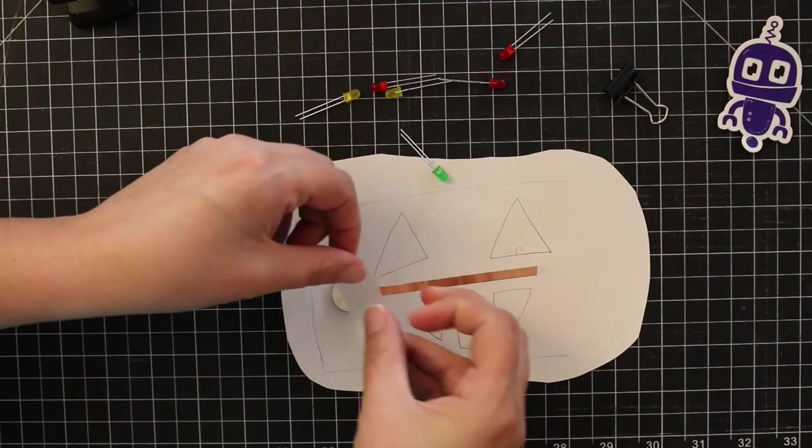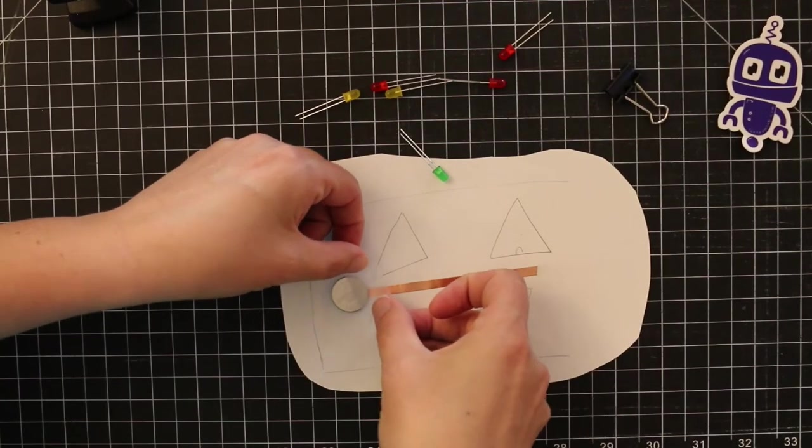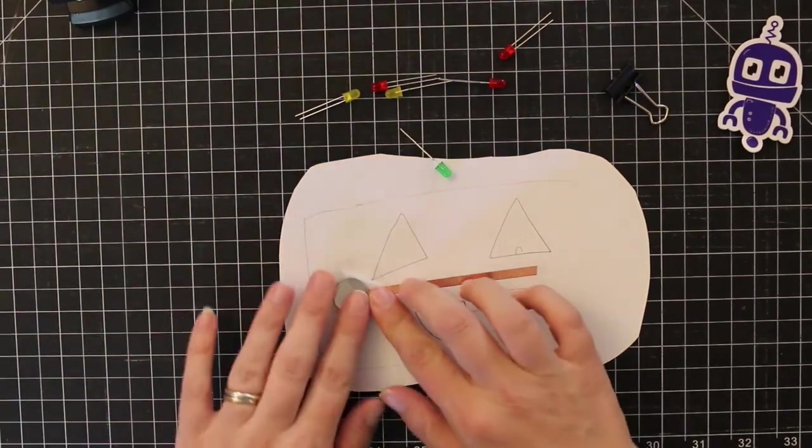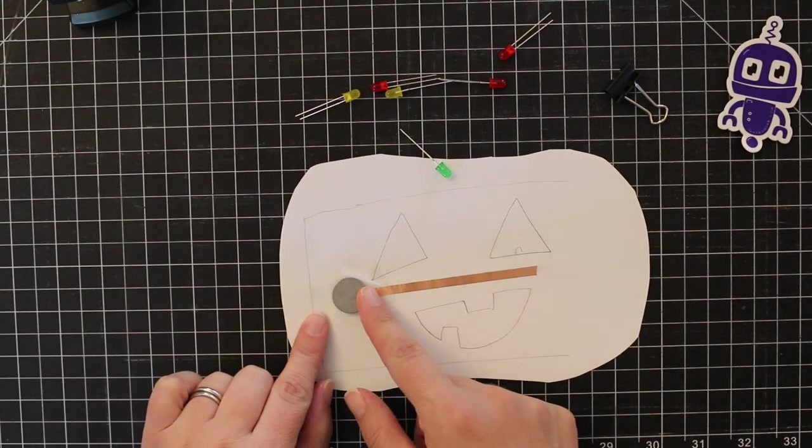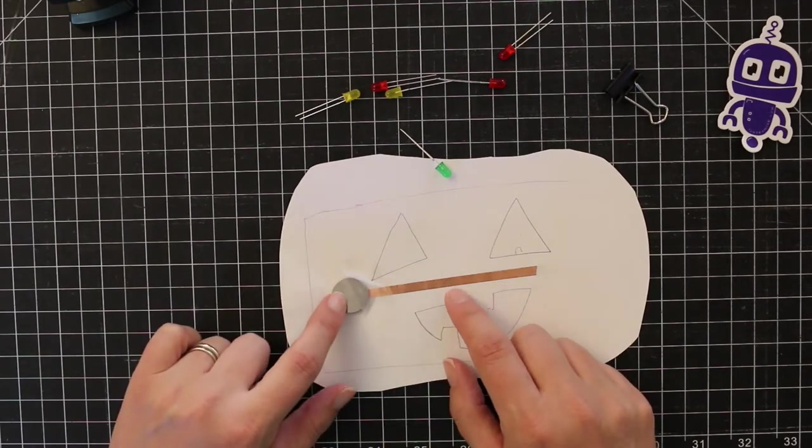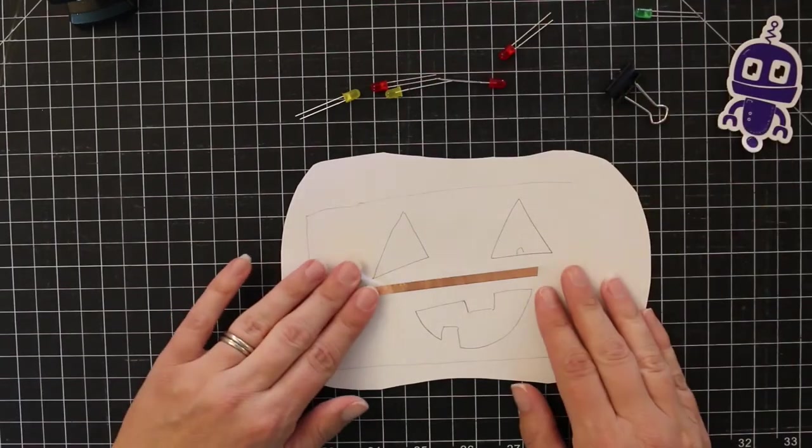I'm going to tape my battery down. There we go. I don't want to tape my whole battery. I'm taping just part of it because I want to make sure that the positive part of the battery is still available for folding over the copper tape we're going to put on.